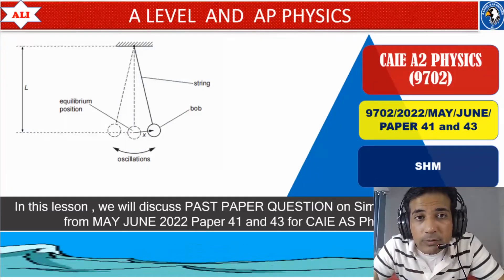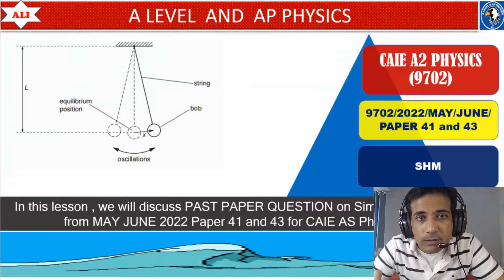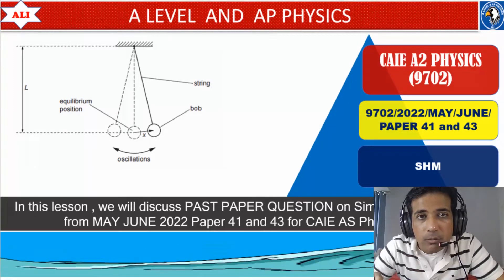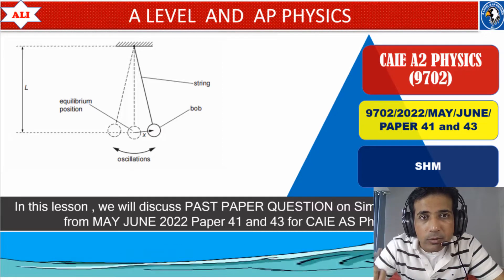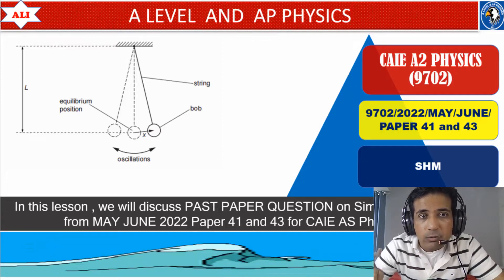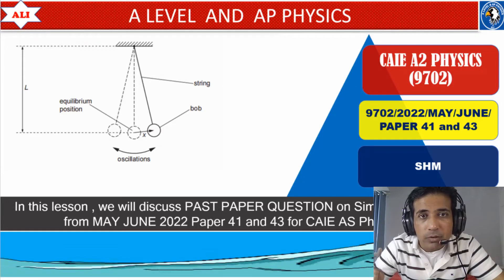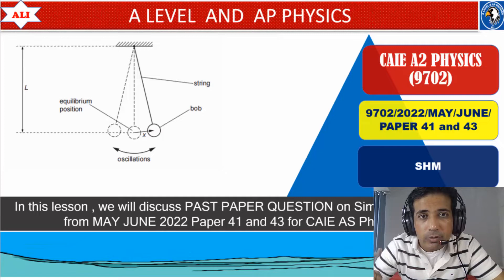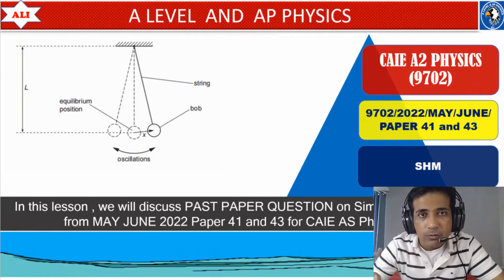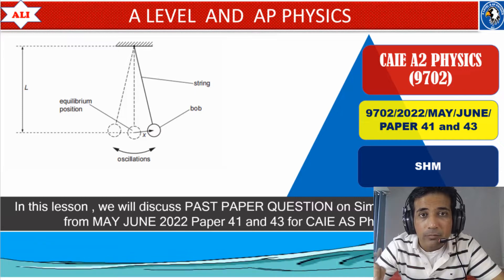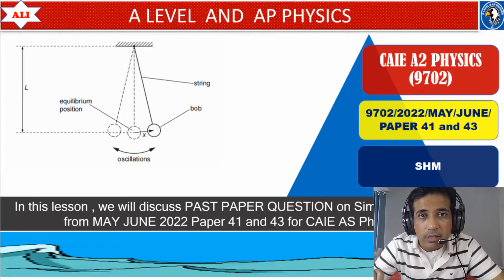Welcome to A-Level and AP Physics. In today's lesson, we will discuss a typical type of question on simple harmonic motion from May June 2022, Paper 4, Variant 1. We will discuss some very important concepts about simple harmonic motion that are most frequently asked in past paper questions. In order to get maximum benefit from this video, first pause the video, do the question by yourself, and then check the solution. This is the best way to get maximum benefit from videos. Let's study together, let's improve together.